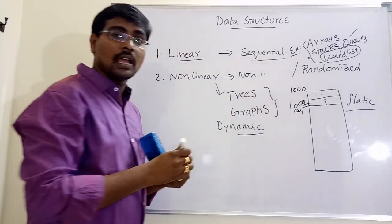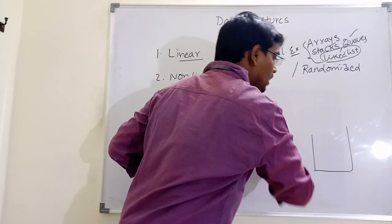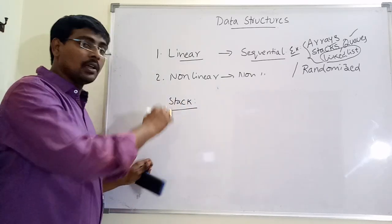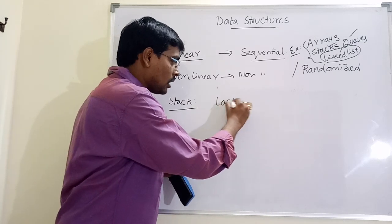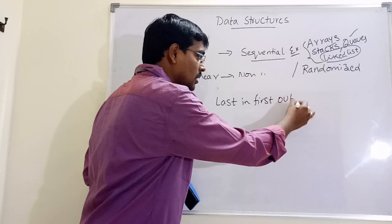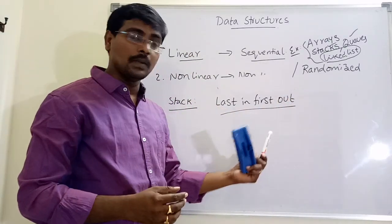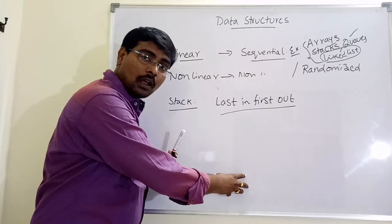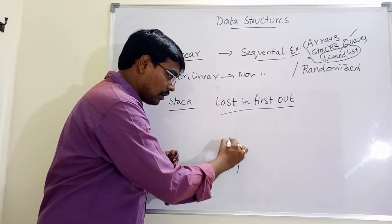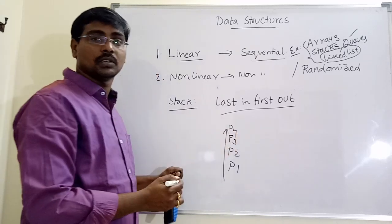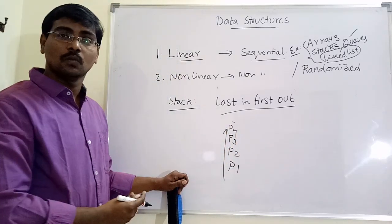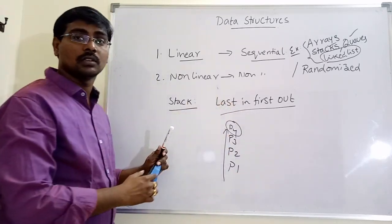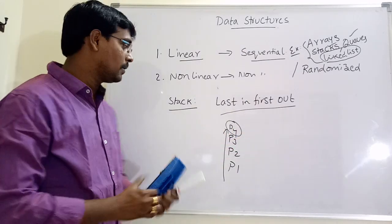We have two more linear data structures: stack and queue. Everyone knows the meaning of stack — stack is last in first out. Suppose we have some set of elements placed in a fashion where the last inserted element is the first one removed. For example, plates on a dining table: plate 1, plate 2, plate 3, plate 4 are placed one on top of another. If a new person wants a plate, they receive plate 4, which was the last inserted element. So the last inserted element is the first removed element.